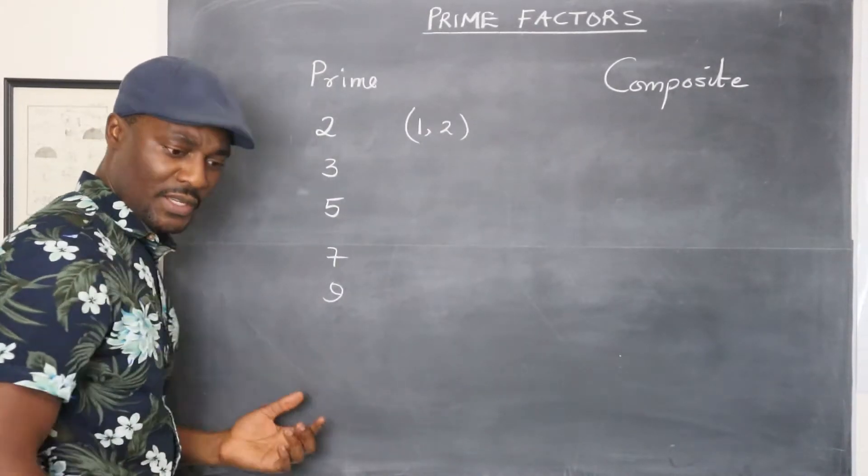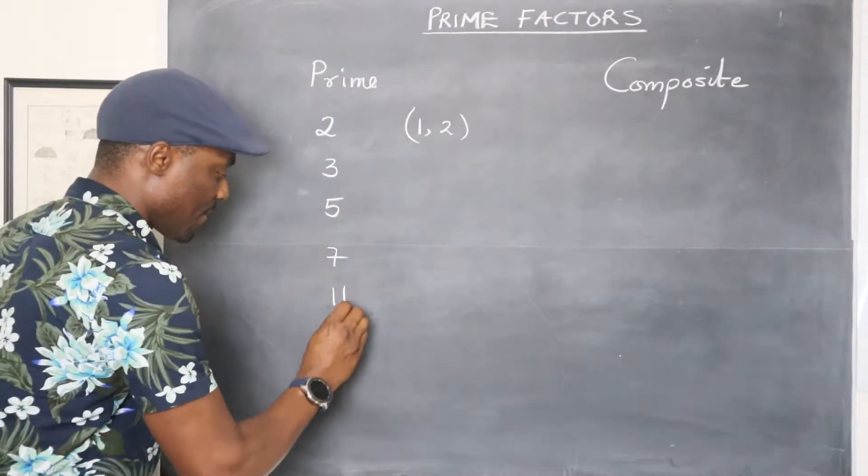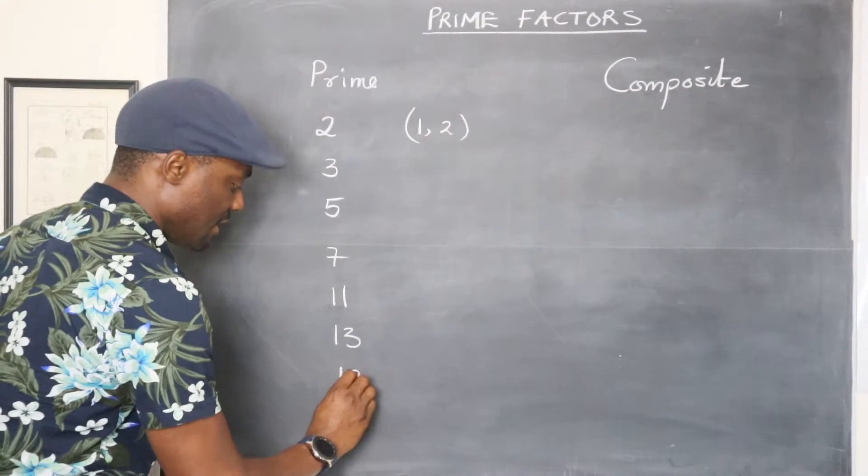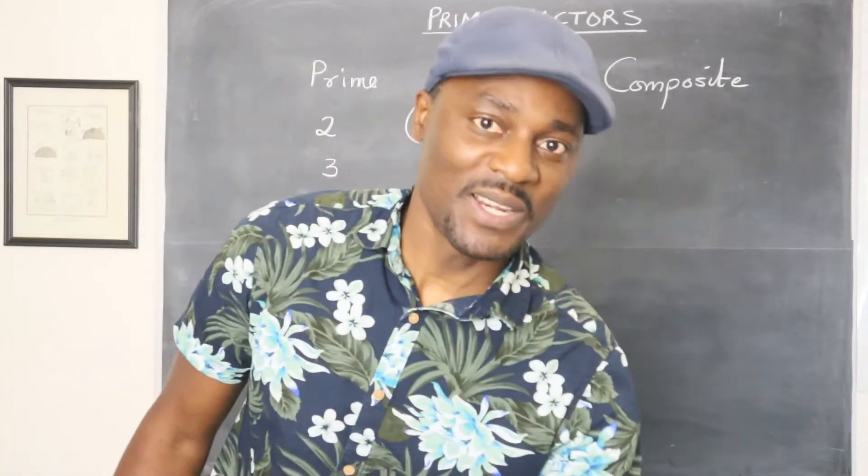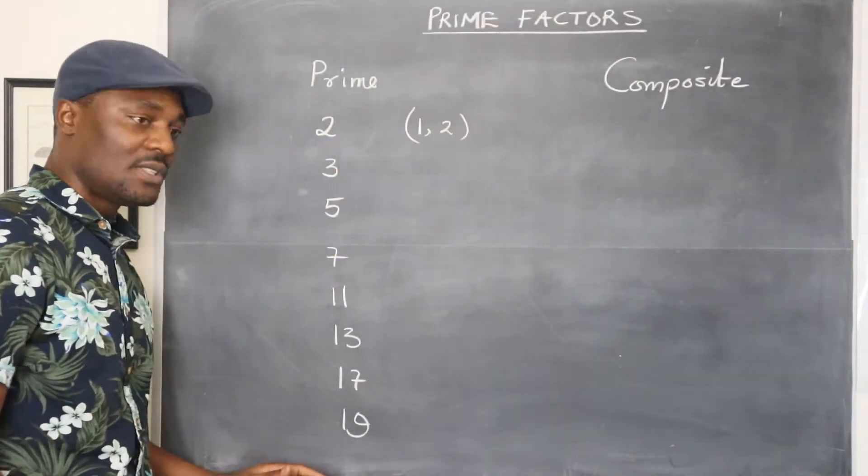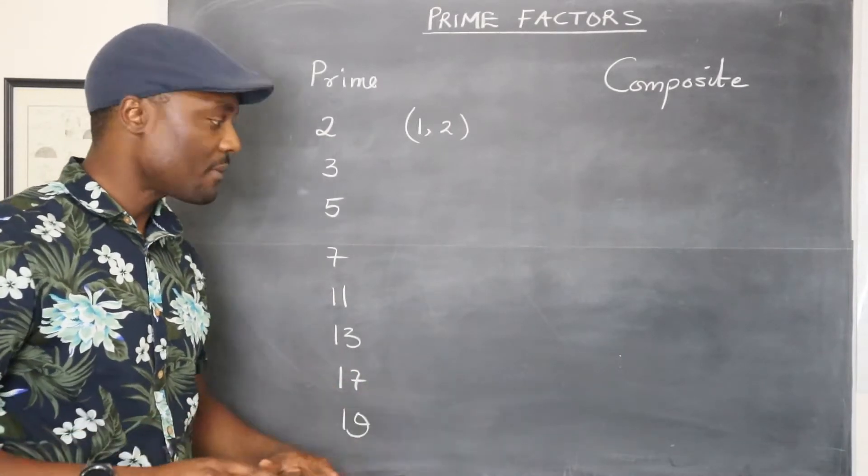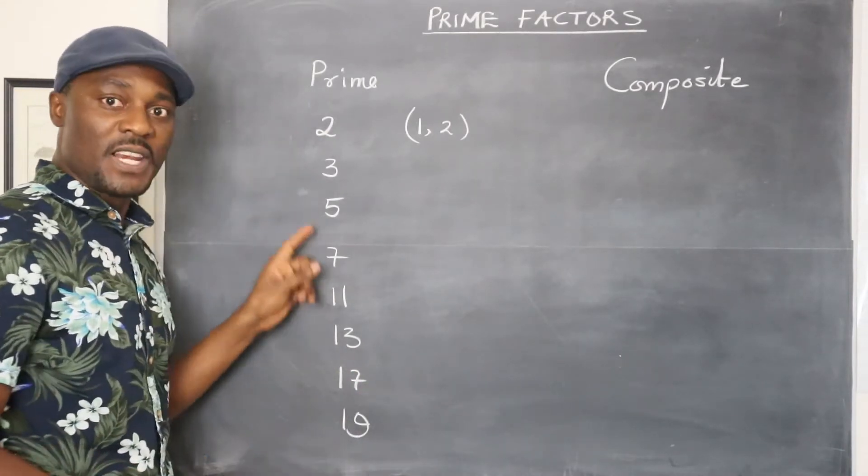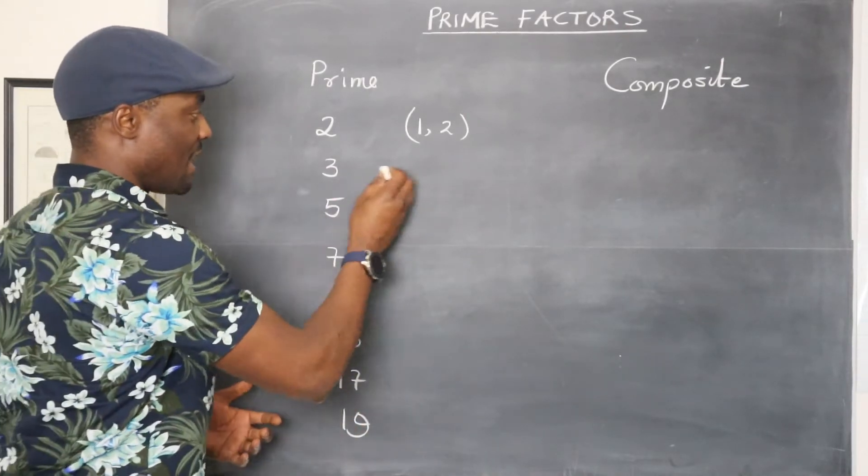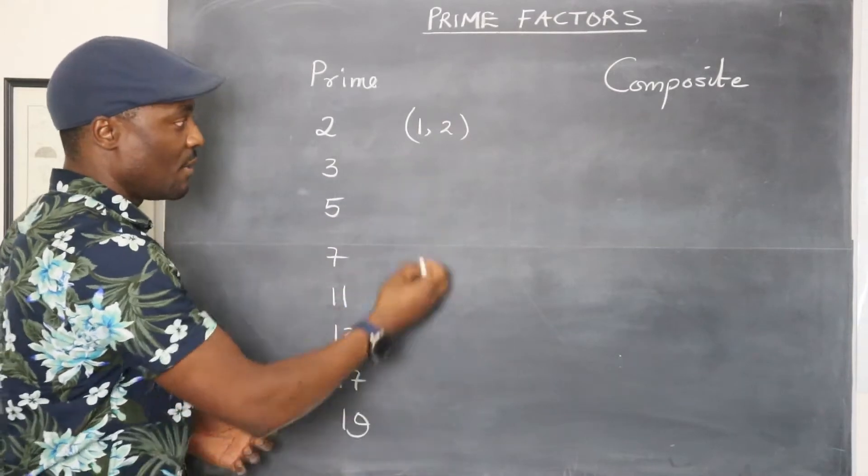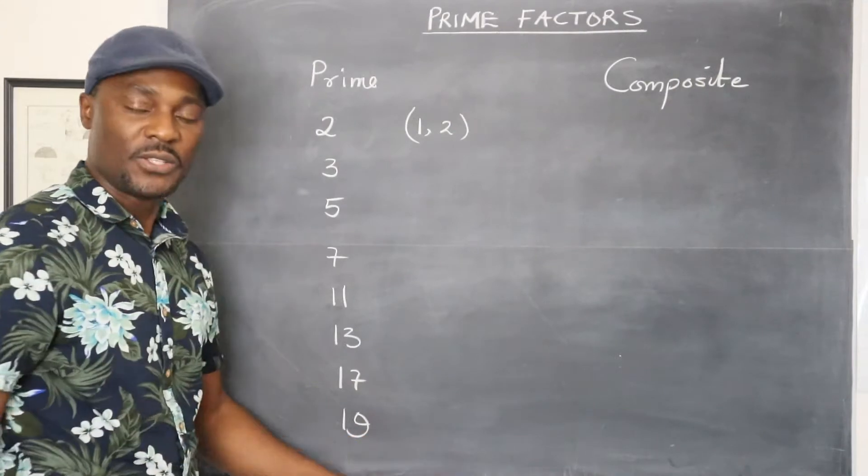So after seven, that's going to be 11, 13, 17, and 19. I was thinking of 19 because I said 20. So basically these are the numbers, the smallest prime numbers you have from zero to 20 because no other number can divide them except themselves and one. So the factors for three will be one and three. Here will be one and five. Here will be one and seven all the way to 19.